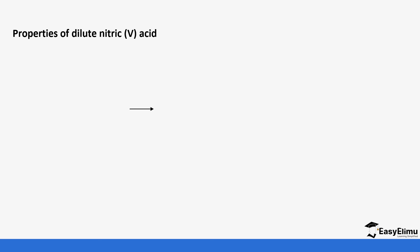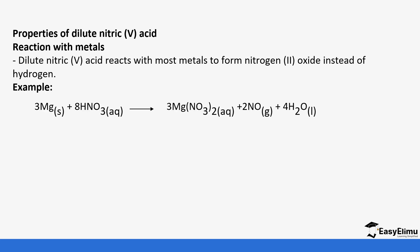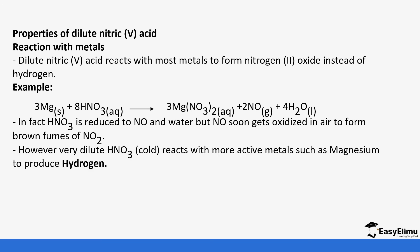Now we look at reactions of dilute nitric acid. With metals, dilute nitric acid forms nitrogen monoxide instead of hydrogen. Normally metals react with acids to form a salt and hydrogen, but in the case of nitric acid, hydrogen is not formed because it is oxidized to water. Magnesium reacts with dilute nitric acid to form magnesium nitrate and nitrogen monoxide and water. Nitric acid is reduced to nitrogen monoxide, but when the nitrogen monoxide is produced it gets quickly oxidized to form nitrogen dioxide.